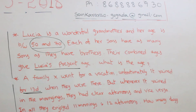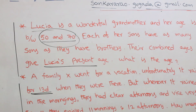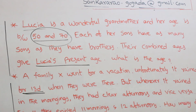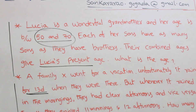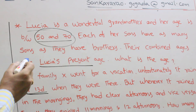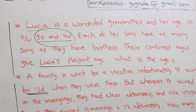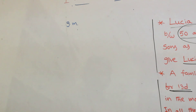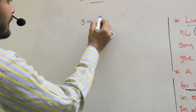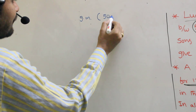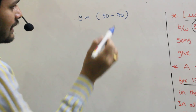Lusa is a wonderful grandmother and her age is between 50 and 70. Each of her sons have as many sons as they have brothers. Their combined age gives Lusa's present age. What is the age? Lusa's present age is unknown, but her age lies between 50 and 70. This is the condition.